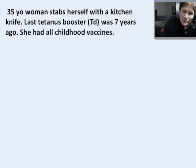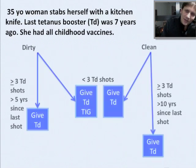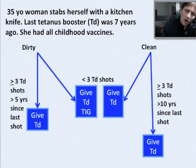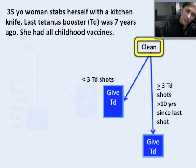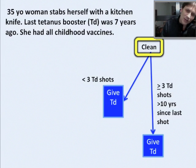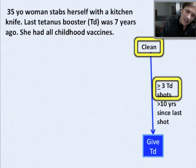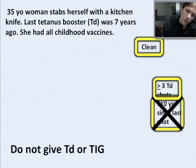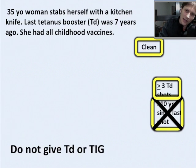Next example: a 35-year-old woman stabs herself with a kitchen knife. Her last tetanus booster was seven years ago and she had all her childhood vaccines. Clean or dirty? Probably clean — it's a kitchen knife, so hopefully clean. Three or more tetanus shots? Yes. Has it been more than 10 years? No. So this woman does not need a tetanus booster, and she definitely does not need the tetanus immunoglobulin.